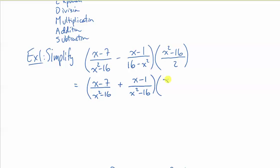So now that I have a common denominator, I will put this first bracket together with one denominator. So it's x plus x, negative 7 plus negative 1, negative 8. That's my simplified bracket, B of BEDMAS.